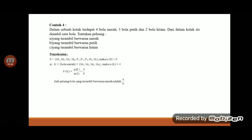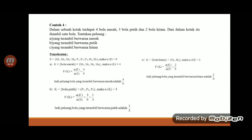Berarti 4 bola merah, 3 bola putih, dan 2 bola hitam. Ditambahkan berarti ruang sampelnya ada 9. Sedangkan peluang yang terambil berwarna merah, berarti merahnya ada 4, berarti 4 dibagi 9. Sedangkan yang B, peluang terambilnya bola berwarna putih, putihnya ada 3, berarti 3 dibagi 9 atau boleh ditulis sepertiga. Terus untuk yang C, peluang terambilnya bola berwarna hitam, berarti hitamnya ada 2, berarti 2 per 9.